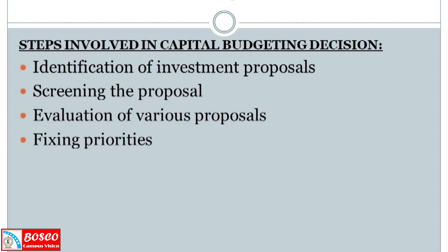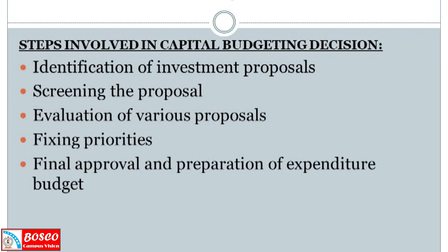We will do this in the fourth step — fixing priorities. The next step is Final Approval and Preparation of the Expenditure Budget. The evaluation criteria will be used to satisfy and prioritize proposals. We will approve the capital expenditure budget and approve the proposals.